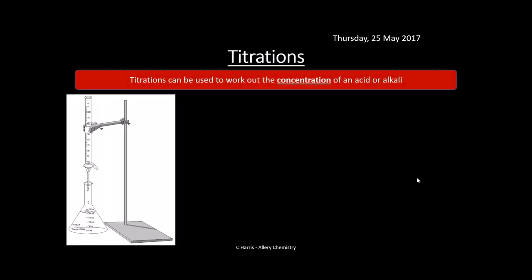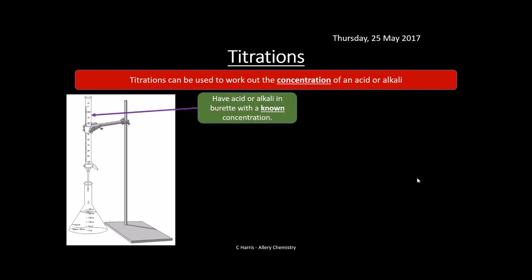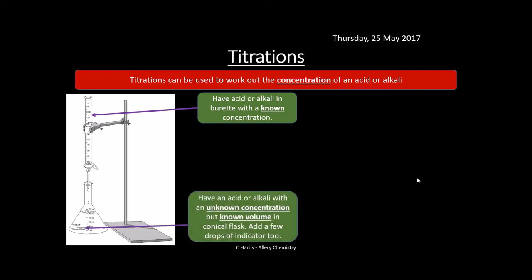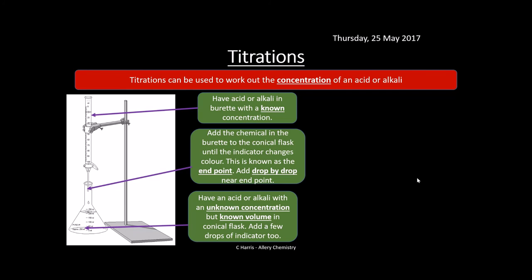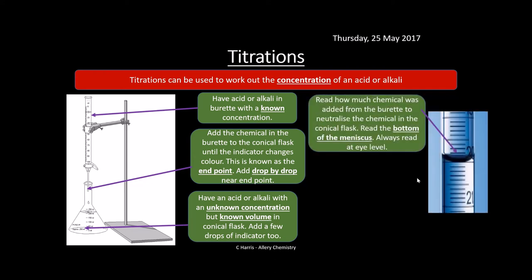Titrations can be used to find the concentration of an acid or alkali. The burette contains a solution of known concentration; the conical flask contains the acid or alkali of unknown concentration (known volume) plus a few drops of indicator. Add the burette solution drop by drop, especially near the end point, until the indicator changes colour. Record how much was added from the burette — always read from the bottom of the meniscus at eye level.